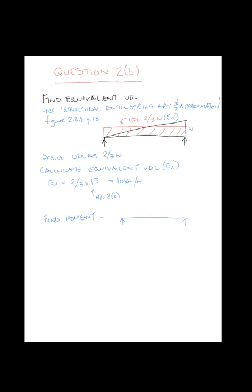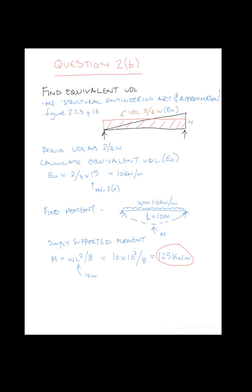So we draw this out on the beam elevation. And this is 10kN per meter. It is a 10 meter span. So the bending moment comes out as WL squared over 8. And L is 10 meters. 10 times 10 squared over 8 gives you 125 kN meters as our estimated bending moment from the equivalent UDL.